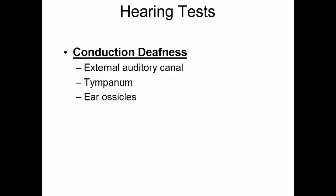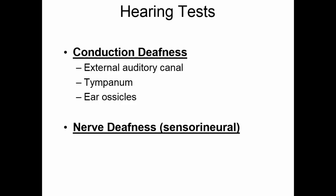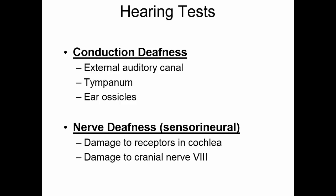The other kind of deafness is nerve deafness or sensorineural deafness. Damage to the receptors in the cochlea can result in sensorineural deafness. Exposure to loud sounds for long periods of time can damage these receptors, or there could be damage to the cranial nerve, which can be caused by some drugs.